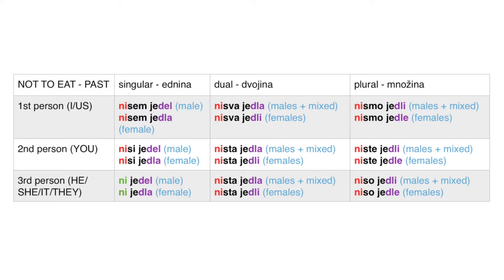Moving on to dual and plural for 'not to eat' in past tense: first person dual is 'nisva jedla' or 'nisva jedli'. Second person dual is 'nista jedla' or 'nista jedli'. Third person dual is 'nista jedla' or 'nista jedli'. First person plural is 'nismo jedli' or 'nismo jedle'. Second person plural is 'niste jedli' or 'niste jedle'. Third person plural is 'niso jedli' or 'niso jedle'.